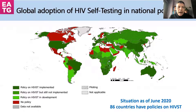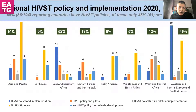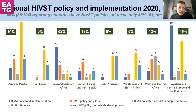This slide shows the number of countries that have enforced policies to implement self-testing. As of June 2020, 86 countries had developed policies to allow the implementation of self-testing. But one thing is having the policy in place, and another is how much the country has actually put it into practice. East and Southern Africa has 52% routine implementation, and Western and Central Europe and North America 46%, while other regions are much further behind. We need more advocacy in terms of how to implement these in countries.